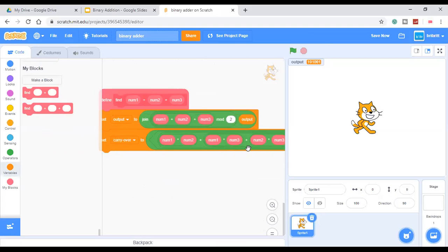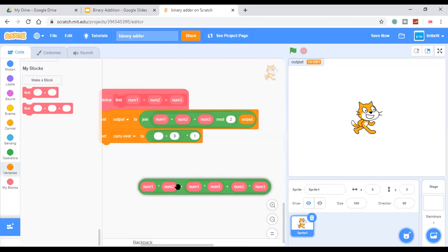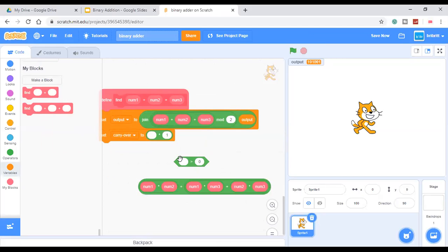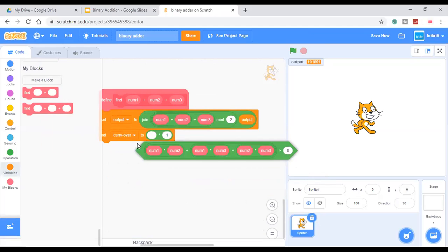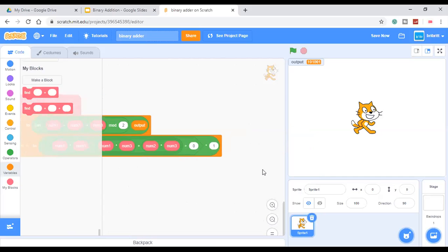And we'll set carry over to this big expression: num1 times num2 plus num1 times num3 plus num2 times num3 is greater than 0. You can also put plus 0 over here. The main thing is that we want to convert it into a number on the right here.